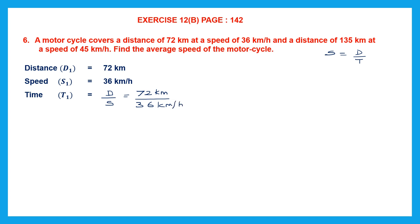We divide 72 by 36. As you know, 36 ones are 36 and 36 twos are 72. Kilometers cancel, and we just have hours — two hours. So time t1 we have found is 2 hours.